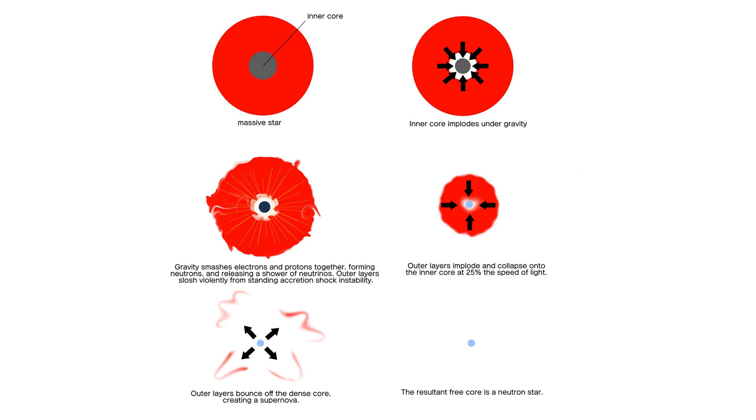The supernova explosion that follows is a much slower and more dramatic event. The core's collapse generates a shockwave that propagates outward,